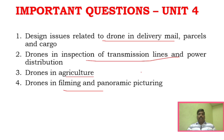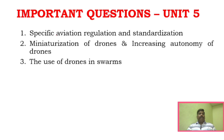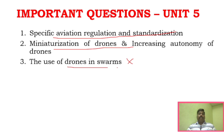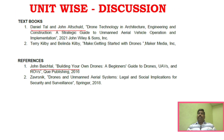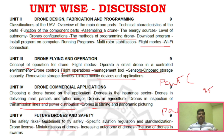For Unit 5: Aviation Regulation and Standardization, Miniaturization of Drones — very very important concept. Uses of Drones in SPANS — confirm 3 questions in Part C. For Part A of Unit 5: Increasing Autonomy of Drones, Guidelines, Safety Risk — these are the what-is type questions.